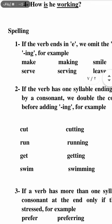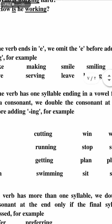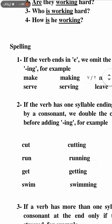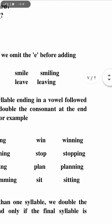Rule number two: if the verb has one syllable, ending in a vowel followed by a consonant — for example cut, put, run — we double the consonant at the end before adding -ing.